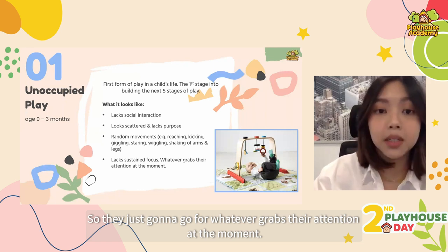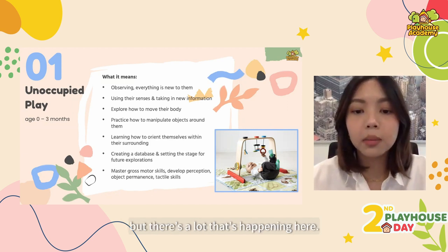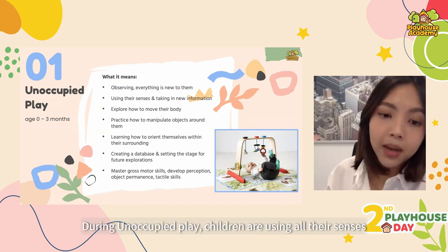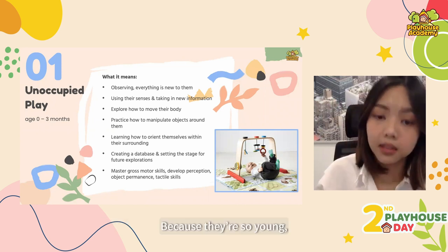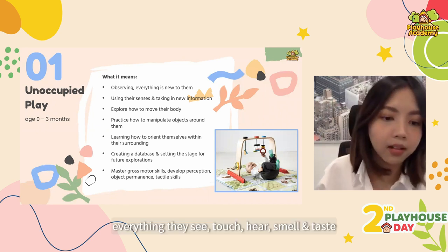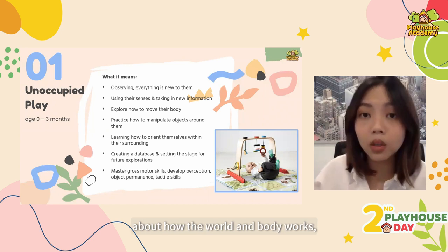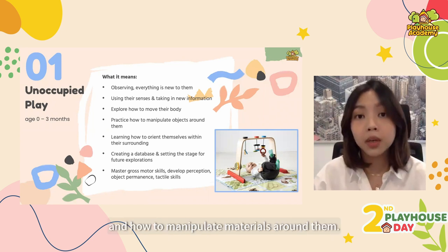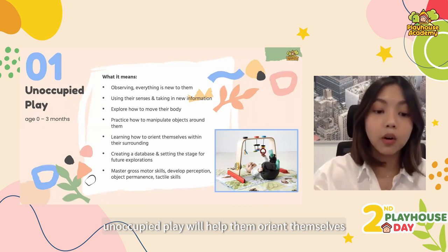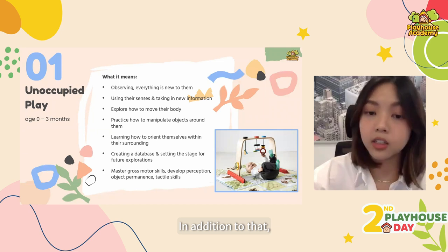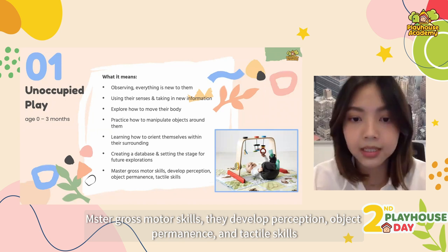They're just going to go for whatever grabs their attention at the moment. It may not look like much, but there's a lot happening here. During unoccupied play, children are using all of their senses to explore materials around them without any structure. Everything they see, touch, hear, smell, and taste is completely new to them. These young children are observing and taking in a lot of new information about how their world works, how their body works, practicing how to control it, and how to manipulate materials around them. In these first few months of life, unoccupied play helps orient them within their surroundings. They're also learning gross motor skills, developing perception, object permanence, and tactile skills.